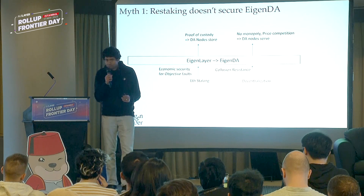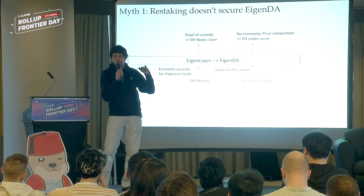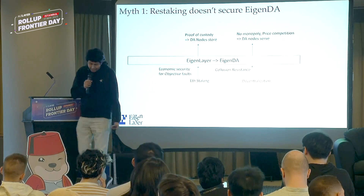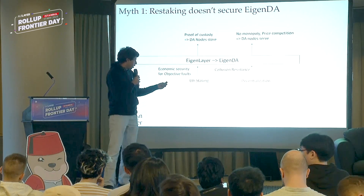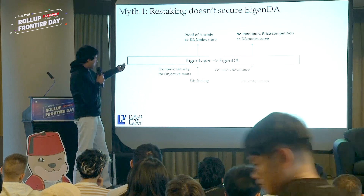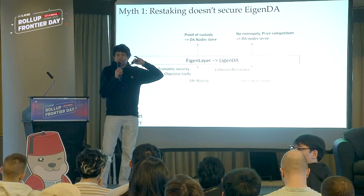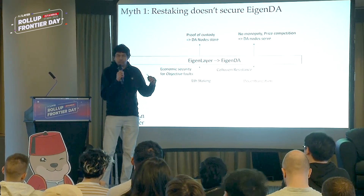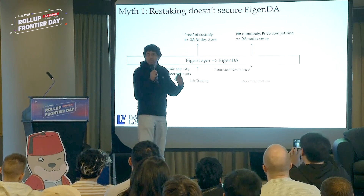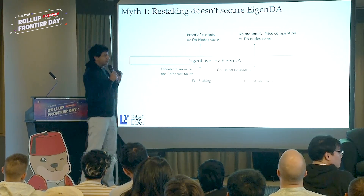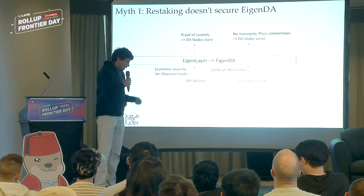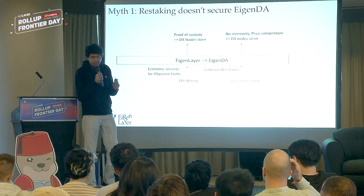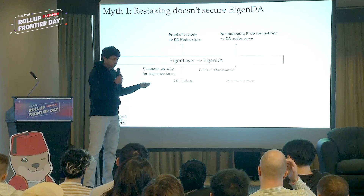EigenDA is a data availability service which does two fundamental things: it downloads and stores the data, and nodes also have to serve the data. EigenDA borrows trust on economic security from ETH staking by using a protocol called Proof of Custody. Proof of Custody is conceptually simple — if you're claiming to store data, you have to compute a function on the data and some private secret, and raise your hand if the hash of this function is zero. This ensures you're actually holding custody of the data, and if you don't, you will get slashed.